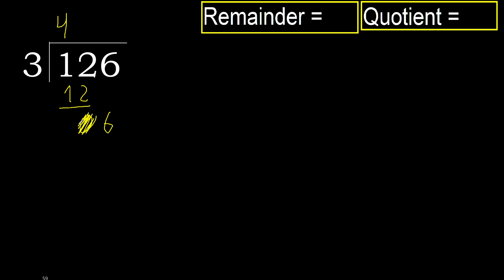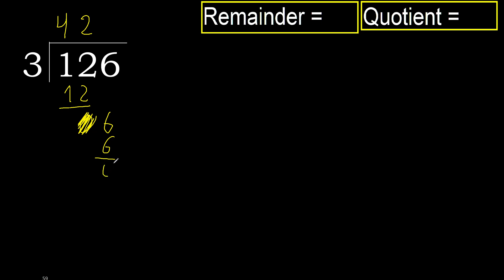Eliminate 0 on this side. Bring down 6. 3 multiplied by 3 is 9 — 9 is greater. 3 multiplied by 2 is 6 — 6 is not greater. Subtract — 0. Next. There is no number remaining, therefore finish.